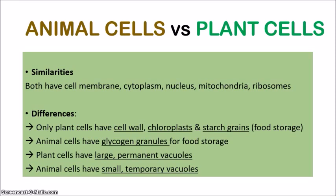When it comes to the differences, these are the key points. Plant cells only have a cell wall — which gives the cell structure and shape — chloroplasts for photosynthesis, and starch grains for food storage. Animal cells have glycogen granules for food storage instead. Regarding vacuoles, plant cells have a large permanent vacuole, while animal cell vacuoles are very small and temporary. This is because plant cells need to store a lot of water — vacuoles are the main storage organelles for water and dissolved nutrients — and since plants can't move around to find water like animals, they need these large permanent vacuoles. The vacuoles also help maintain the shape of the cell.